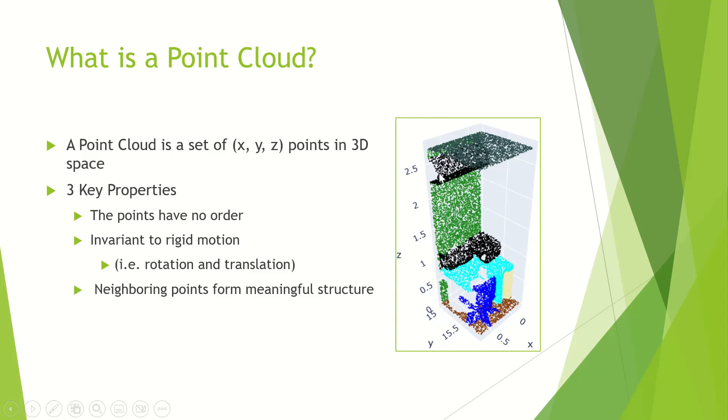The final property is that neighboring points form meaningful structure. If we take a slab right here of these points, we'll see that they all form a flat surface, and this flat surface is part of the wall. If we take just a chunk of these points, the group right here, these points form the chair. We have the arms, the back, and the legs. PointNet is able to take in these three things and perform classification and segmentation on point clouds as a whole.